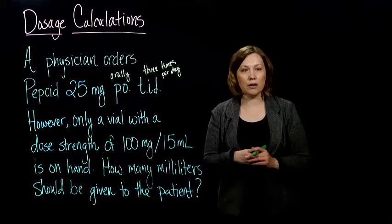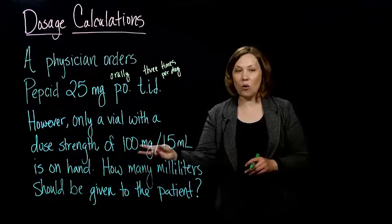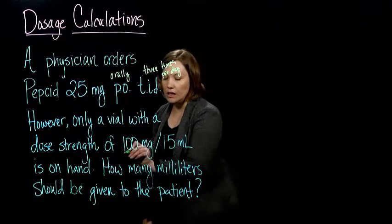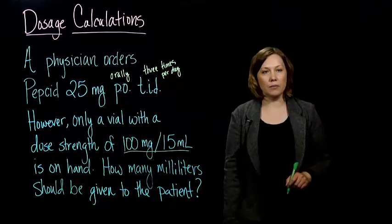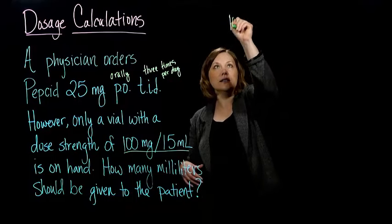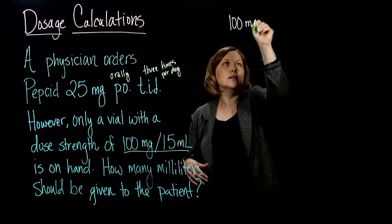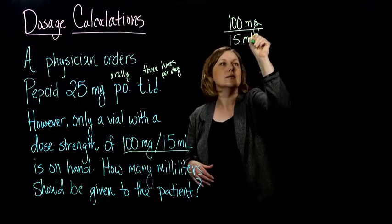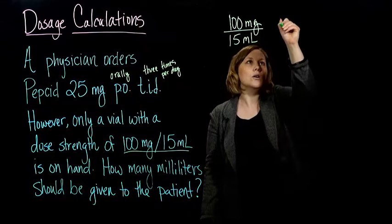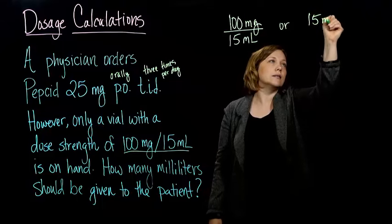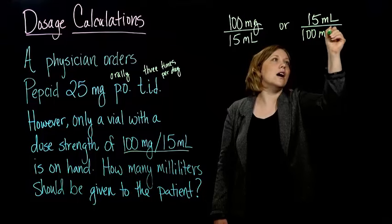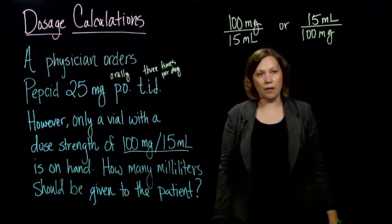So the first thing I'm going to look for is what I have on hand, right? That's going to be my conversion factor. So I've got 100 milligrams per 15 milliliters, so I can write that with the milligrams on the top, or equivalently, I can write the milliliters on the top and the milligrams on the bottom.